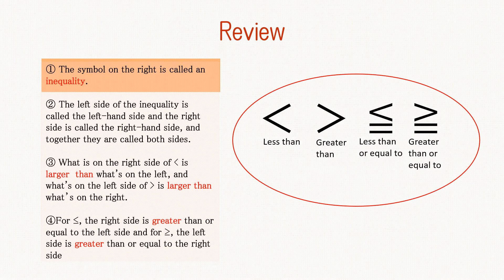Finally, let's review what we have learned. The symbols circled in red from left to right — less than, greater than, less than or equal to, and greater than or equal to — are collectively called inequality signs.